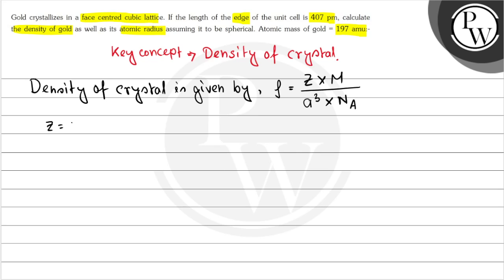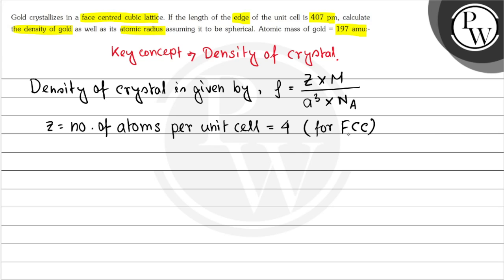Here, z is the number of atoms per unit cell, which is 4 for FCC. M is the atomic mass of the element, that is 197.